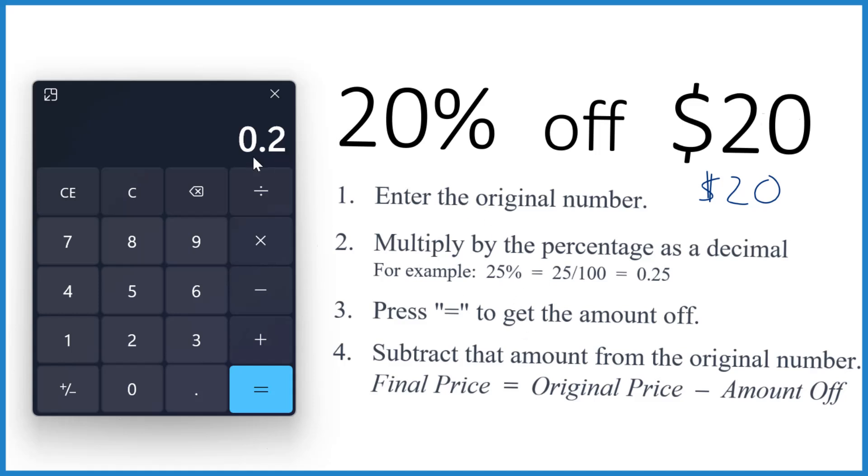So now all we need to do is multiply the .2 times 20, and that tells us that we get $4 off. So we're gonna get $4 off when we take 20% off $20.